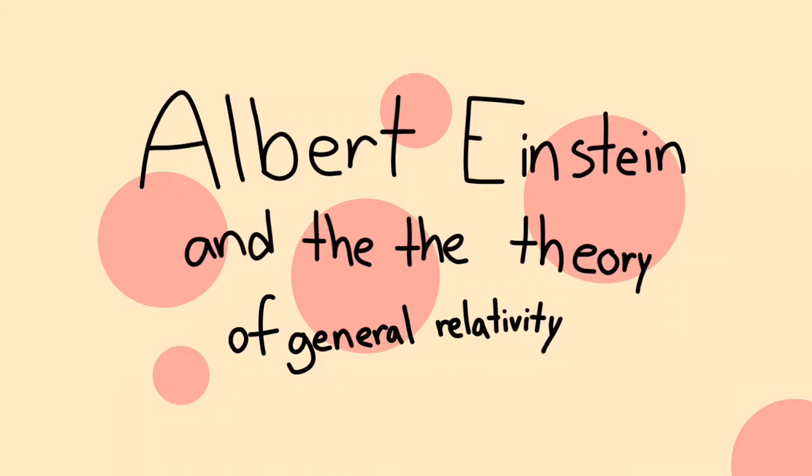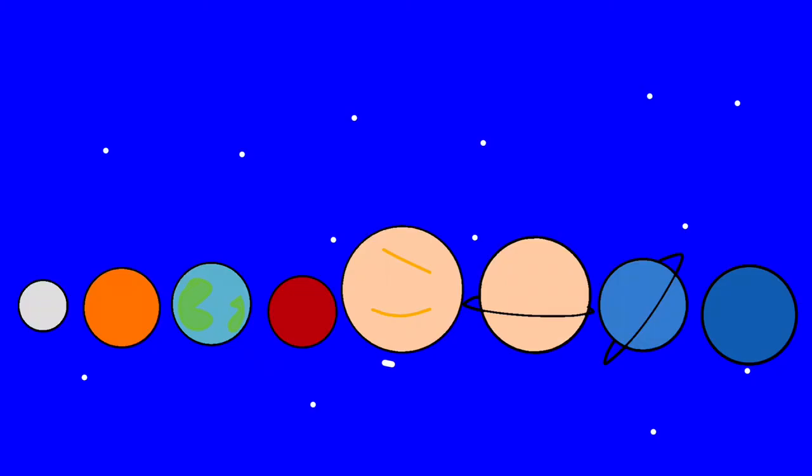This theory also states that when an object is in motion, it will stay in motion unless deviated by another outside object. Every planetary body is surrounded by its own gravitational field.